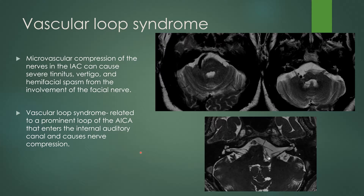A disease process you can get within the IAC is vascular loop syndrome. This can be microvascular compression of the nerves in the IAC resulting in tinnitus, vertigo, and hemifacial spasm if there is compression of the facial nerve. It can also be related to a prominent loop of the AICA, possibly the labyrinthine artery, that enters the IAC and causes nerve compression.